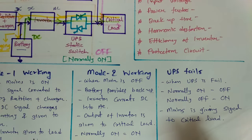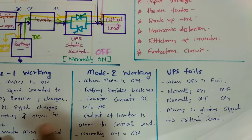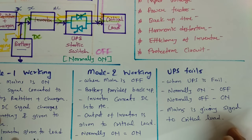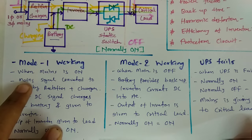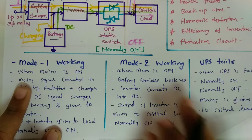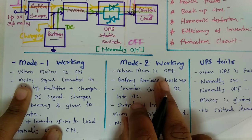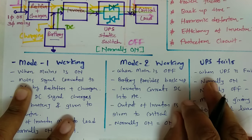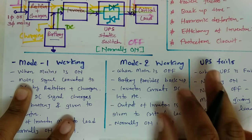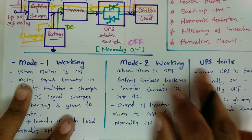So this is how UPS has three different modes. Mode 1 is when mains is on, Mode 2 is when mains is off, and Mode 3 is when UPS has failed.